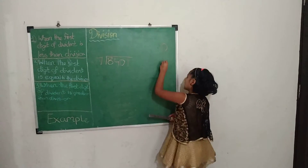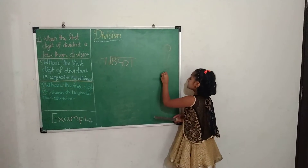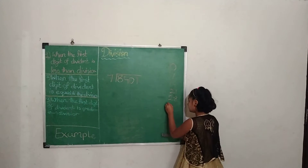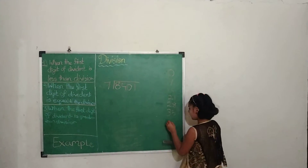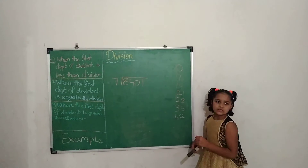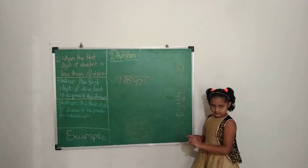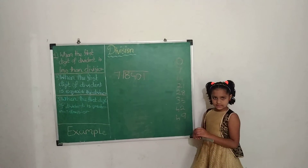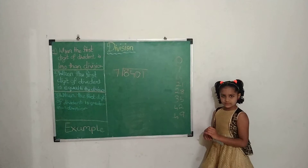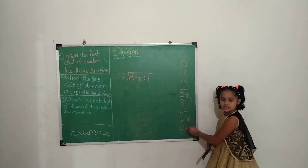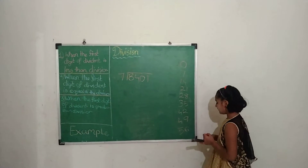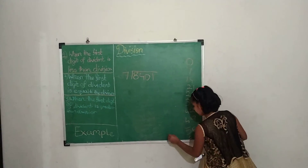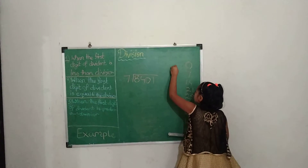7 zeros are 0, 7 ones are 7, 7 twos are 14, 7 threes are 21, 7 fours are 28, 7 fives are 35, 7 sixes are 42, 7 sevens are 49, 7 eights are 56, 7 nines are 63, 7 tens are 70. We write 7 tens as 70 up here because there is not enough space to write below.